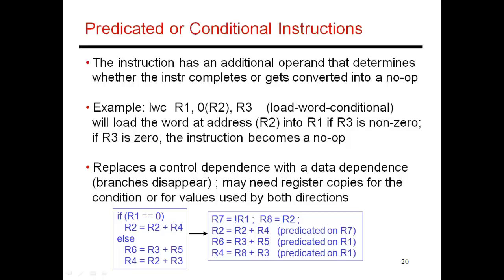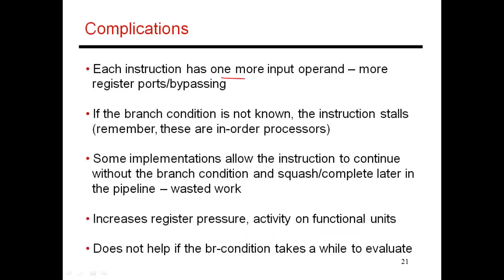Predication requires a new set of instructions. These instructions have an additional operand, the predicate register. Here's an example: this is a load word conditional. A load normally will read from an address and put it into a register R1. In addition, I have this register R3, and so the result gets put into R1 depending on whether R3 is non-zero or not. The main impact of having predication is that each instruction now has this additional register, which means more register file ports, more bypassing logic, and so on. The second major complication is that you're introducing additional data dependencies, which increases the chances of stalls because of data hazards.